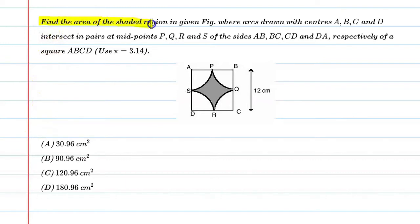Find the area of the shaded region in given figure, where arcs drawn with centers A, B, C and D intersect in pairs at the midpoint P, Q, R, S of the sides AB, BC, CD and DA respectively of a square ABCD. Use π equal to 3.14.